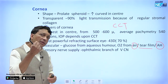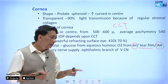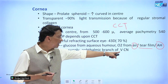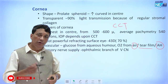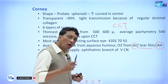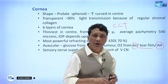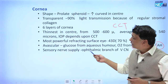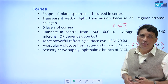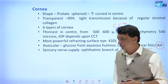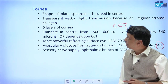The nerve supply of the cornea comes from the ophthalmic branch of the trigeminal nerve (fifth cranial nerve). The cornea is one of the most sensitive structures to touch, supplied by the sensory fibers of the ophthalmic branch.